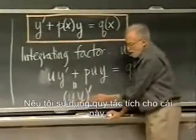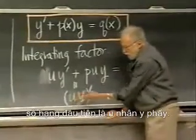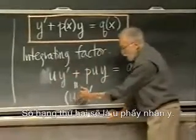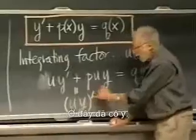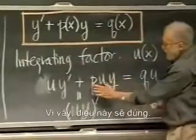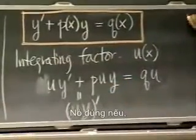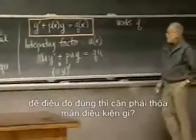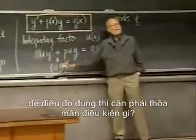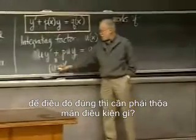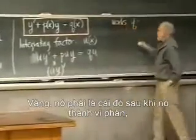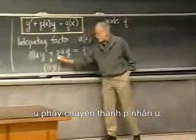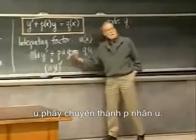If I use the product rule on this, the first term is u times y prime. The second term would be u prime times y. Well, I've got the y there. So, this will work — if what? What's the condition that u must satisfy in order for that to be true? It must be that after I do the differentiation, u prime turns out to be p times u.